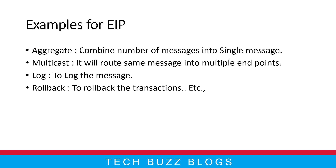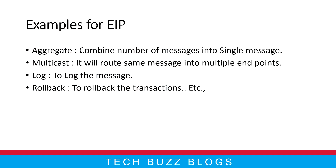Next is Rollback — you know about it. If something fails in your transaction or something is not following the expected process, you can roll back the whole transaction. So there are a lot of enterprise integration patterns like this — these are just examples, and all of them are already implemented and built into Apache Camel for you to use.